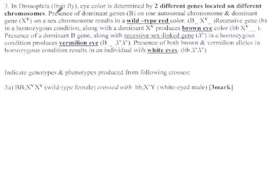Eye color is determined by two different genes on two different chromosomes. There's a dominant gene Big B on one autosomal chromosome or autosome. So we have Big B is one allele, and then on another chromosome, the sex chromosome, we have X big V.